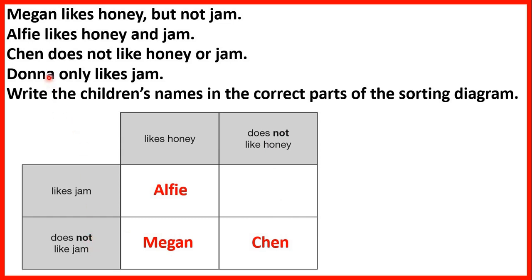And now Donna only likes jam. So Donna needs to be in the row for likes jam but she does not like honey, because if she only likes jam she doesn't like anything else. So we have the children's names in the correct parts of the sorting diagram.